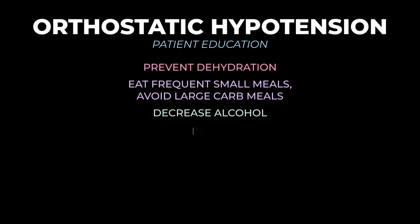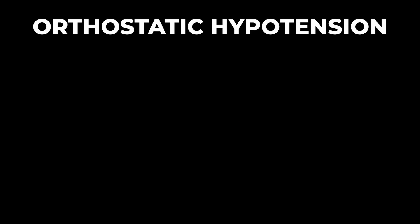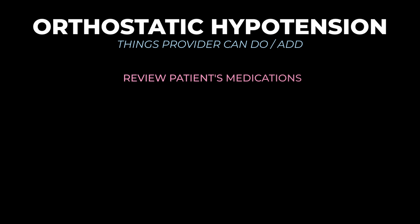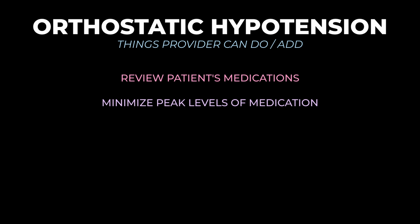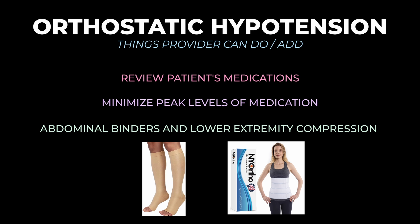Increased dietary salt can help, provided there are no contraindications, as salt promotes volume expansion. This can be done by eating saltier foods or using salt tablets. Providers should conduct a thorough medication review to identify any drugs that may worsen orthostatic hypotension, and consider reducing the dose, changing the frequency, or switching to a sustained-release preparation to minimize peak medication levels. Abdominal binders and lower extremity compression can also help by exerting pressure on the veins, pushing blood back up to the heart.